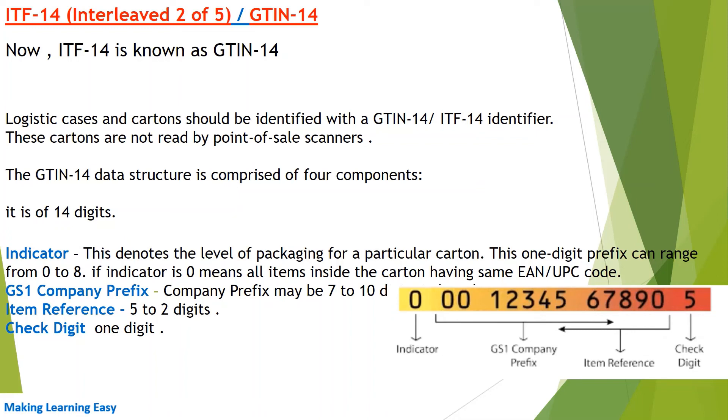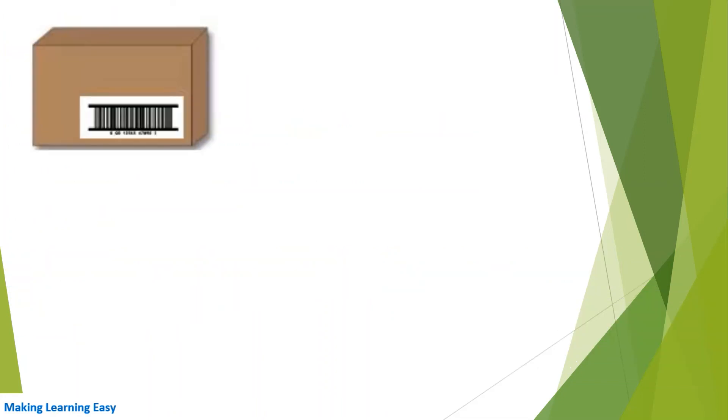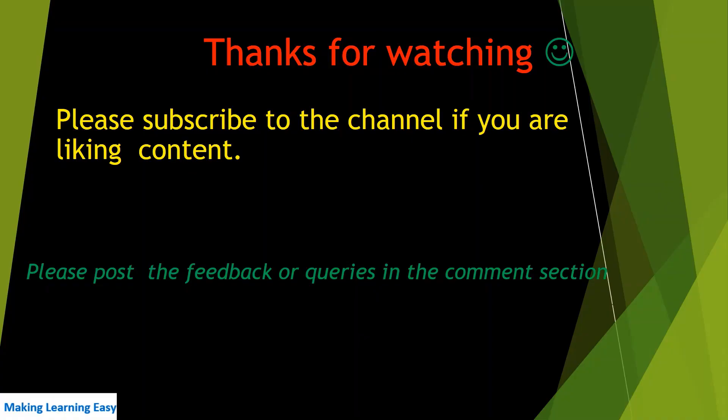necessary zeros at the start of your code. This is the box you can see, with one barcode attached on it. So it is attached on the cases, box, or carton. That's all for this session, thanks for watching, see you in the next video.